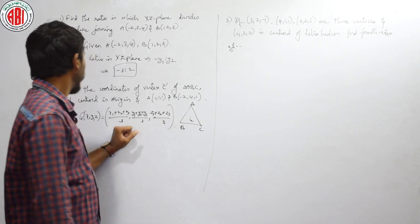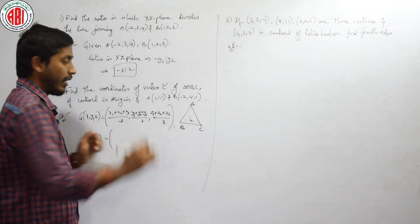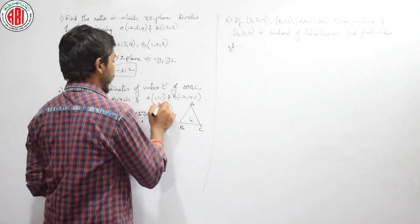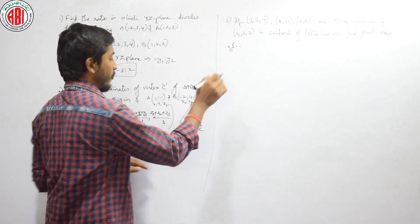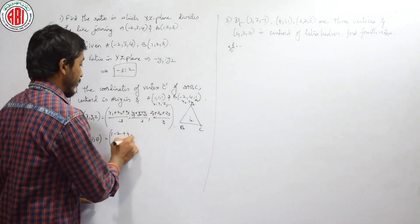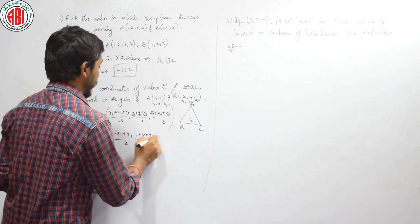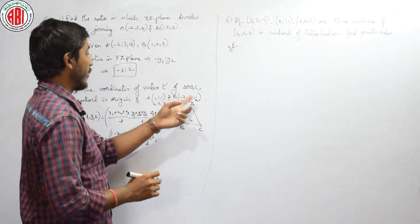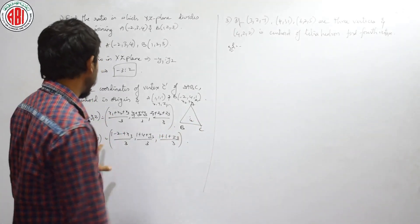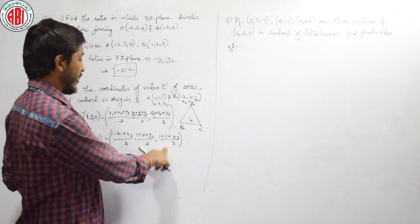They gave the centroid as origin. The three points are X1, Y1, Z1 and X2, Y2, Z2. Shall we substitute? Let us do: (1 minus 2 plus X3), since we do not know that. Next, (1 plus 4 plus Y3). Here (1 plus 1 plus Z3), whole divided by 3. Let us equate each term — X coordinate to X coordinate, Y coordinate to Y coordinate, Z coordinate to Z coordinate.